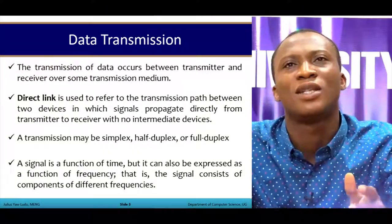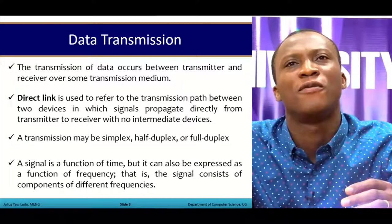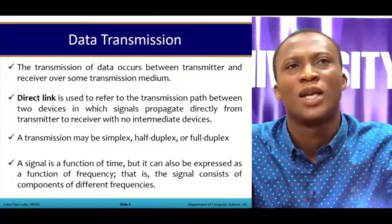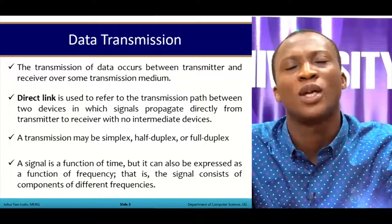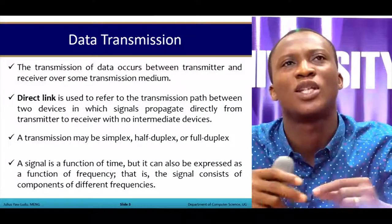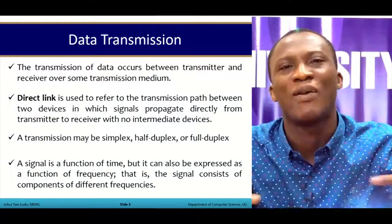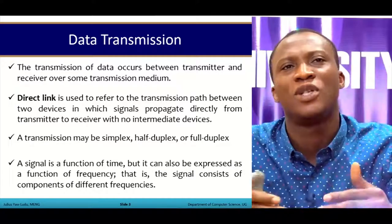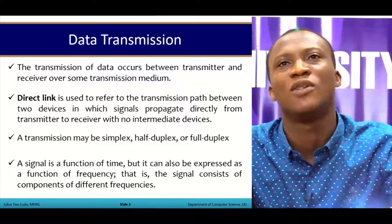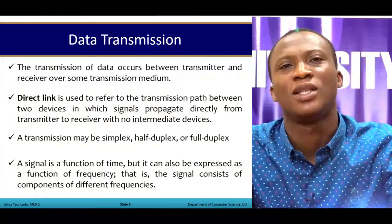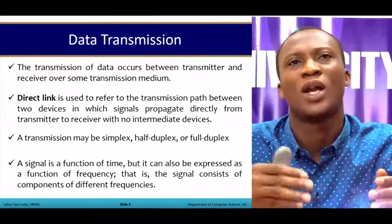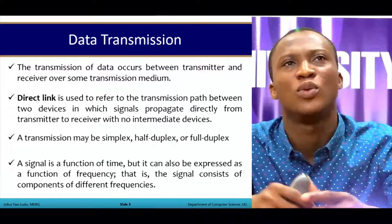Intermediate devices can be illustrated with a picture of having device A going to device C. If device A is connected directly to device C using a cable — the transmission medium — then that is a direct link. However, if device A has to go through device B before getting to device C, that forfeits the direct link, meaning device A is going through another hub or device to get to C.